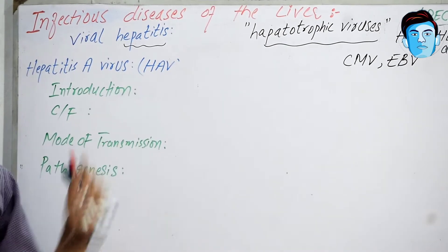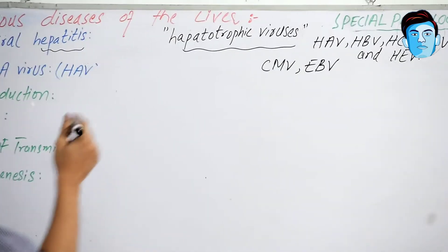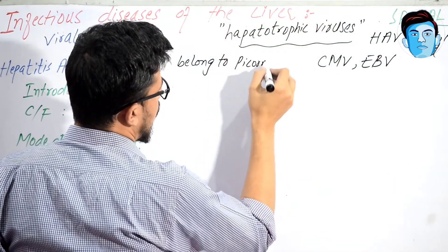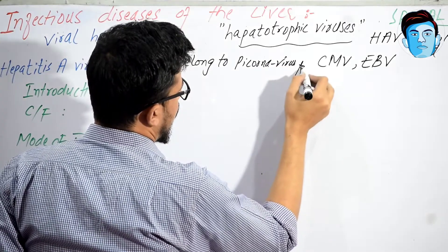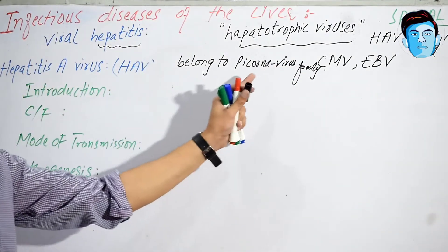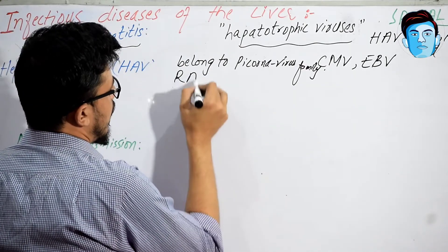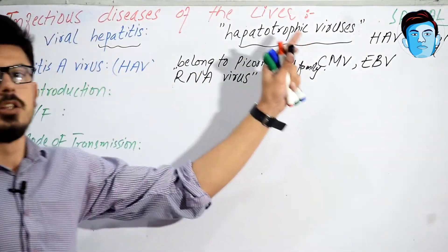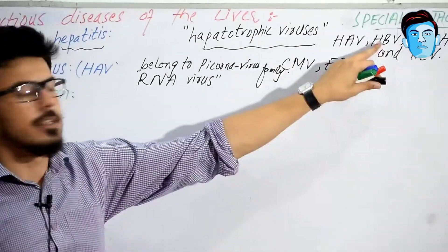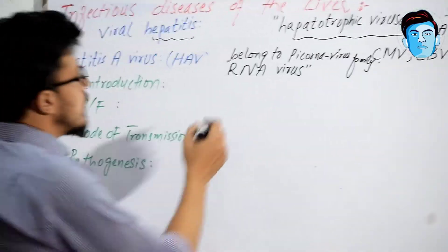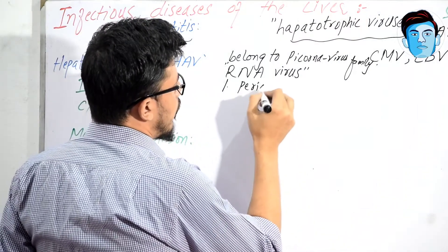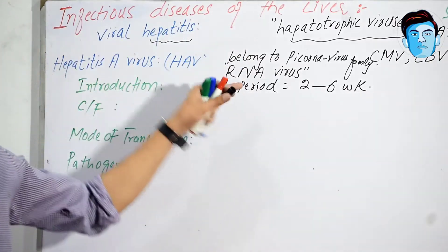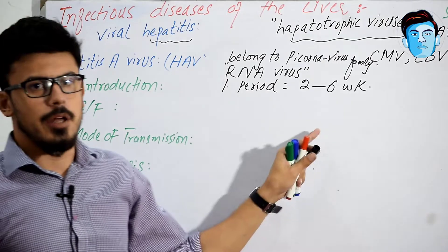Hepatitis A virus belongs to the Picornaviridae family and is an RNA virus. Remember that all hepatotrophic viruses are RNA viruses except hepatitis B, which is a DNA virus. The incubation period of hepatitis A ranges from two to six weeks — meaning from the beginning of infection until symptoms appear.